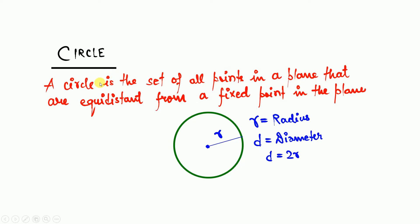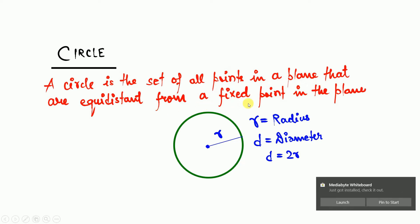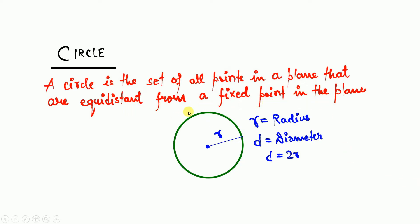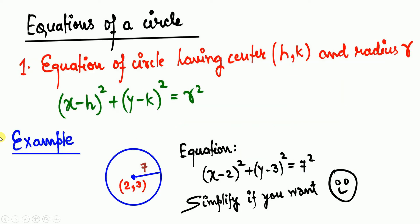How do we define a circle? A circle is the set of all points in a plane that are equidistant from a fixed point in the plane. As you can see the green color line — this circumference is the collection of all infinite points. Whichever point you choose on the circle, each point is equidistant from the center. That distance is called the radius. To find the diameter, simply take double the radius.